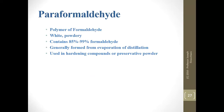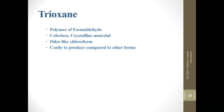Paraformaldehyde is the polymer of formaldehyde — white, powdery, and solid. It contains 85–99% formaldehyde and is generally formed from evaporation or distillation. It's used in hardening compounds or preservative powder, making it an accessory chemical. Trioxane is also a polymer of formaldehyde — a colorless crystalline material that smells like chloroform. It is costly to produce compared to other forms, which is why people don't tend to work with it.